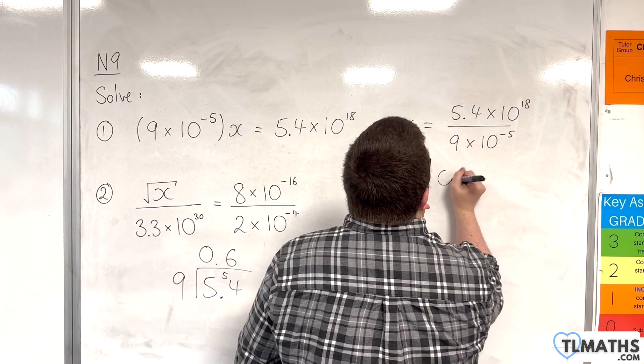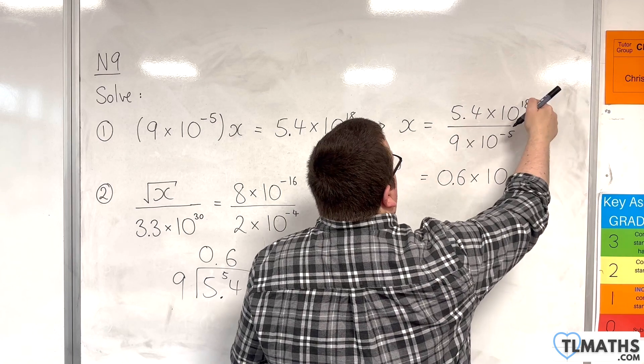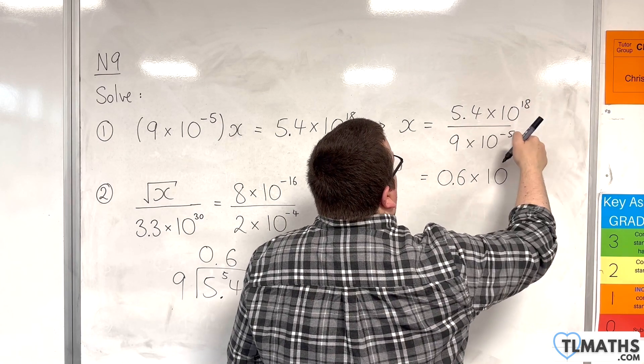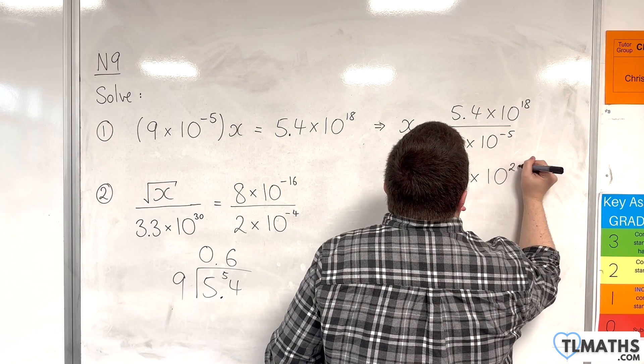So, we have 0.6 times by 10 to the power of, now, we've got 18 take away minus 5. So, 18 plus 5 is 23.